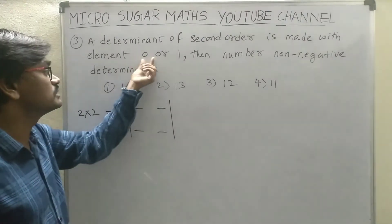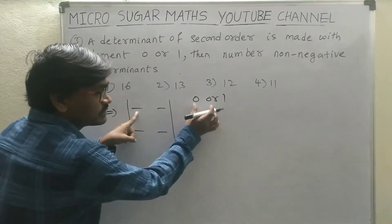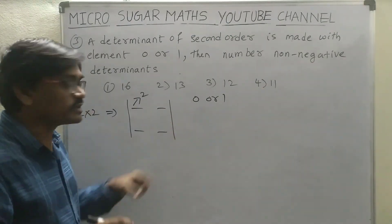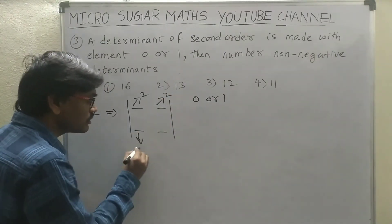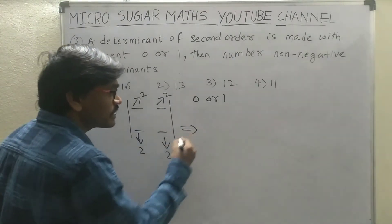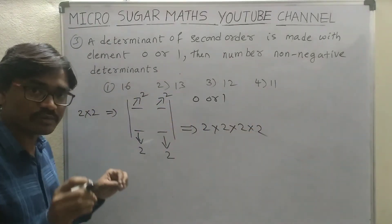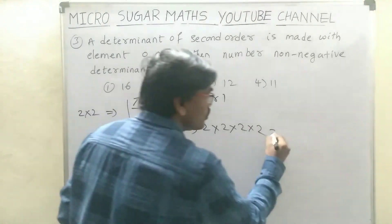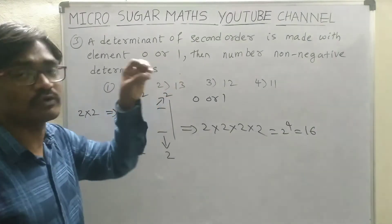Each place is filled up with 0 or 1 only. That means the 1st place is filled up with either 0 or 1 — having 2 chances. The 2nd place is filled up with either 0 or 1 — having 2 chances. Similarly, the 3rd place also 2 chances, and the 4th place also 2 chances. Therefore, the number of determinants is equal to the product of all these chances — 2 to the power 4. So 16 determinants will be formed using 0 or 1 only.